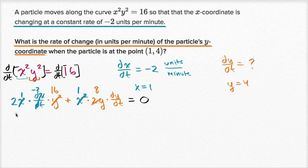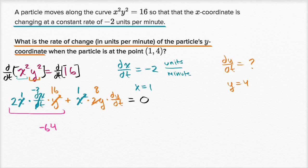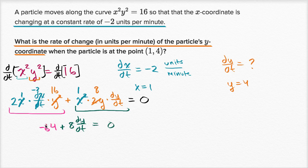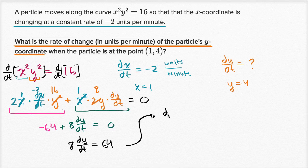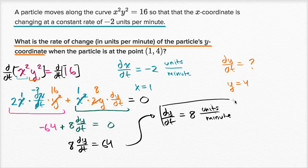So this simplifies to: two times one times negative two times 16 — that is negative 64. And then one times eight times dy/dt, so plus eight dy/dt, is equal to zero. Add 64 to both sides and we get eight times dy/dt equals 64. Divide both sides by eight, and you get dy/dt equals eight — also in units per minute. And we are done.